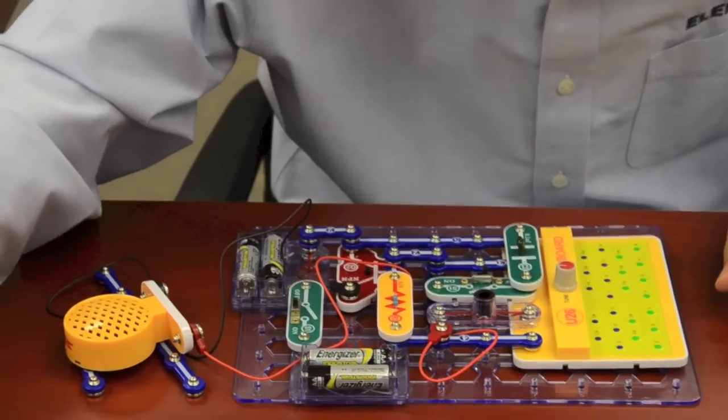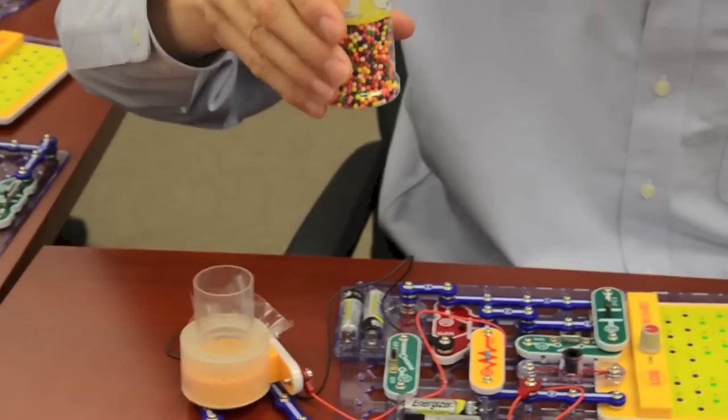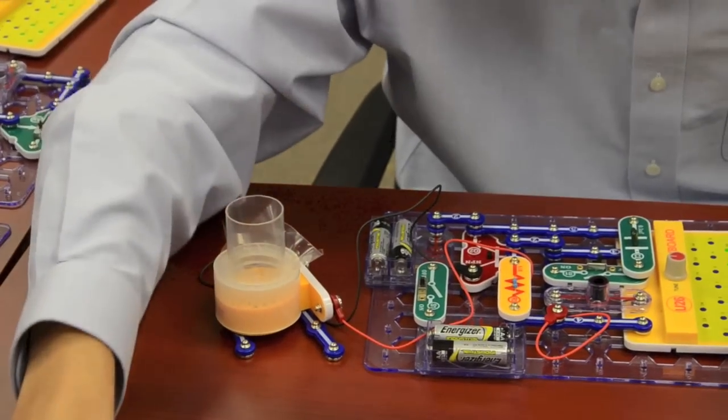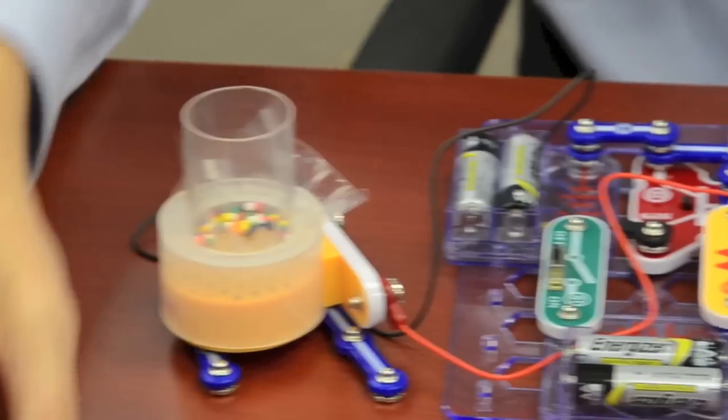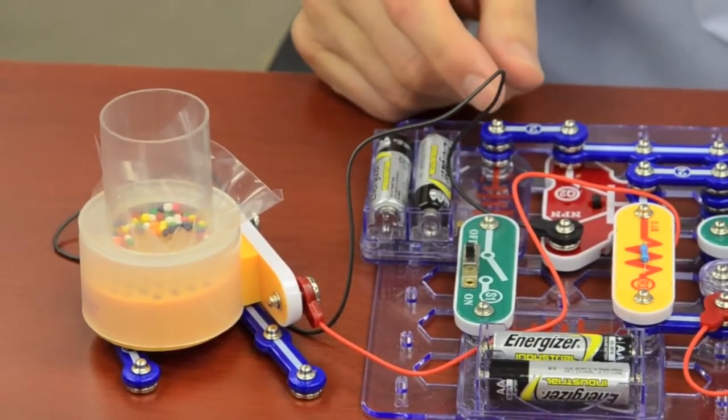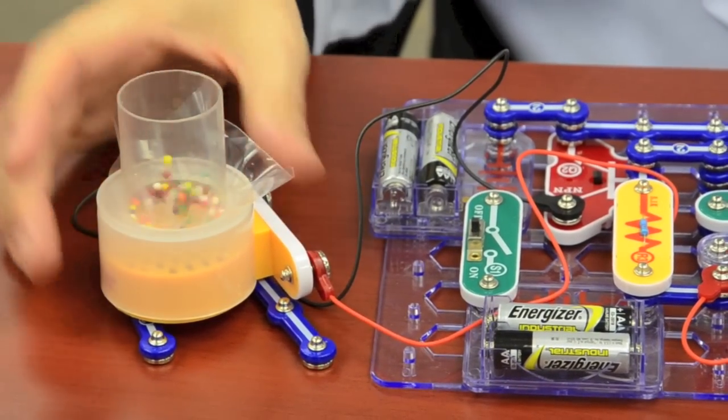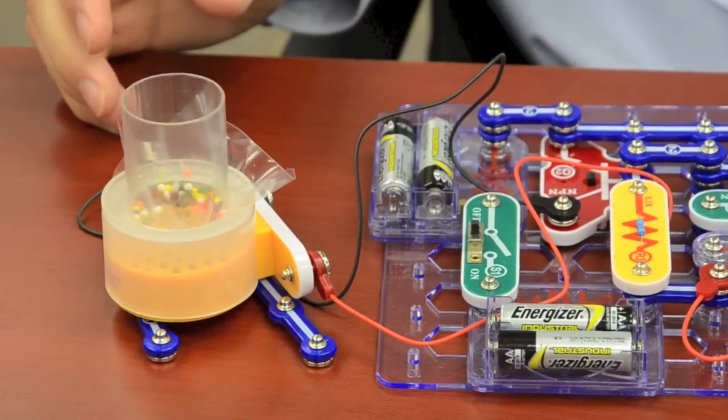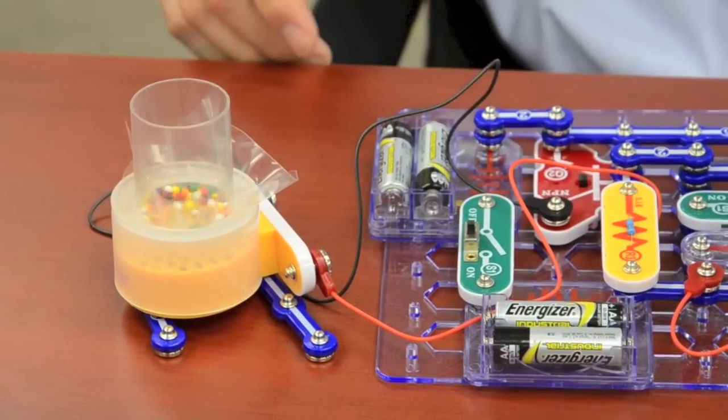It also comes with a sound energy demonstration container which you can put on the speaker. Then take some household candy and pour some of that into the sound energy demonstration container. Activate the keyboard to show that the sound has energy. You can also do it with the optical theremin.